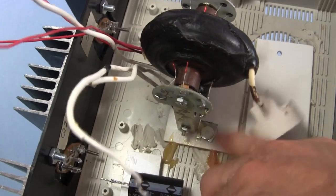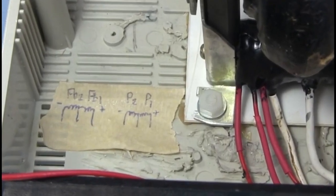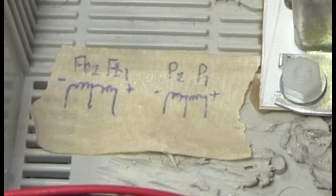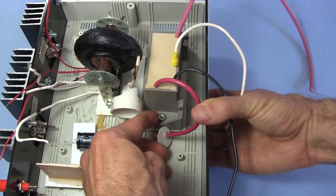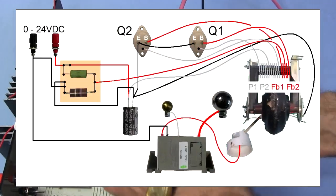I bolt the flyback transformer in place. Notice I've labeled the various windings P1, P2, FB1 and FB2. I also bolt the voltage multiplier, or tripler, in place. And next to wire it all together.